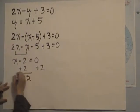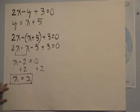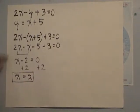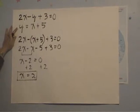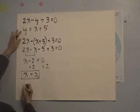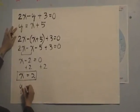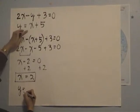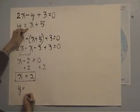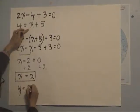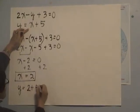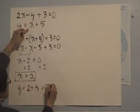Now, this x equals to 2, we're going to substitute this value into the second equation. So second equation is y equals x plus 5, instead of x, we're going to put 2, 2 plus 5 equals to 7.